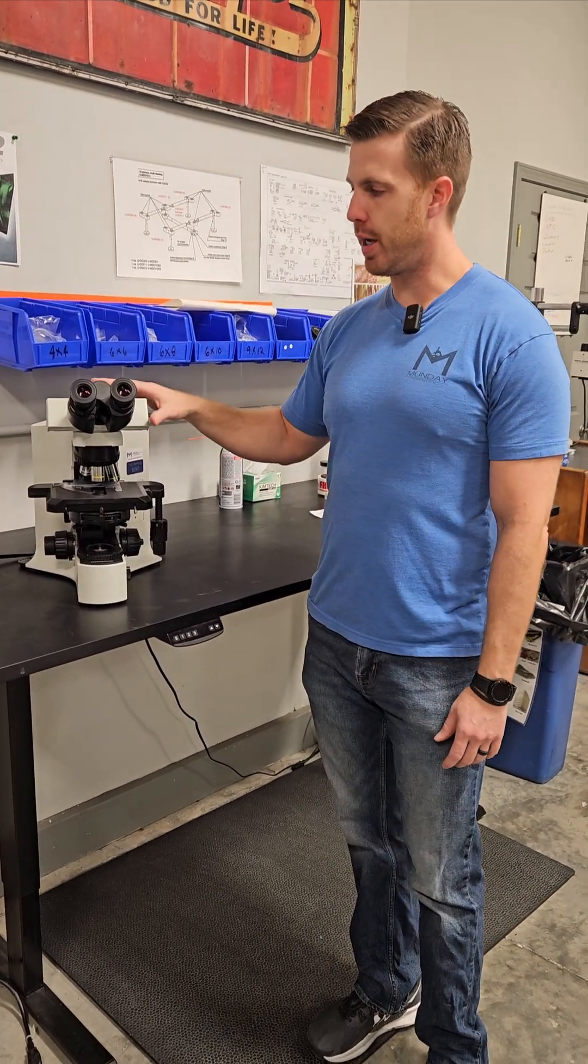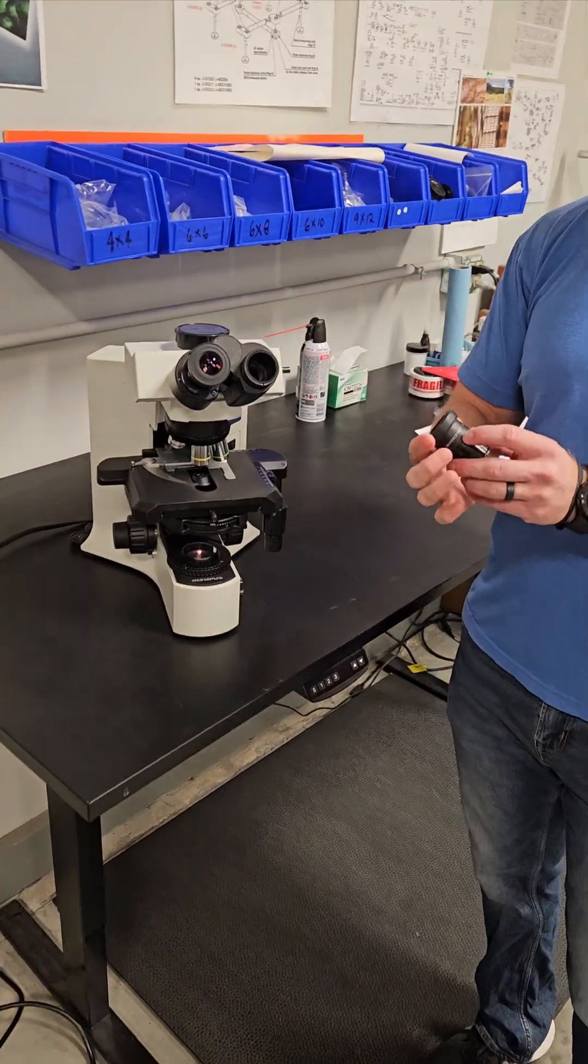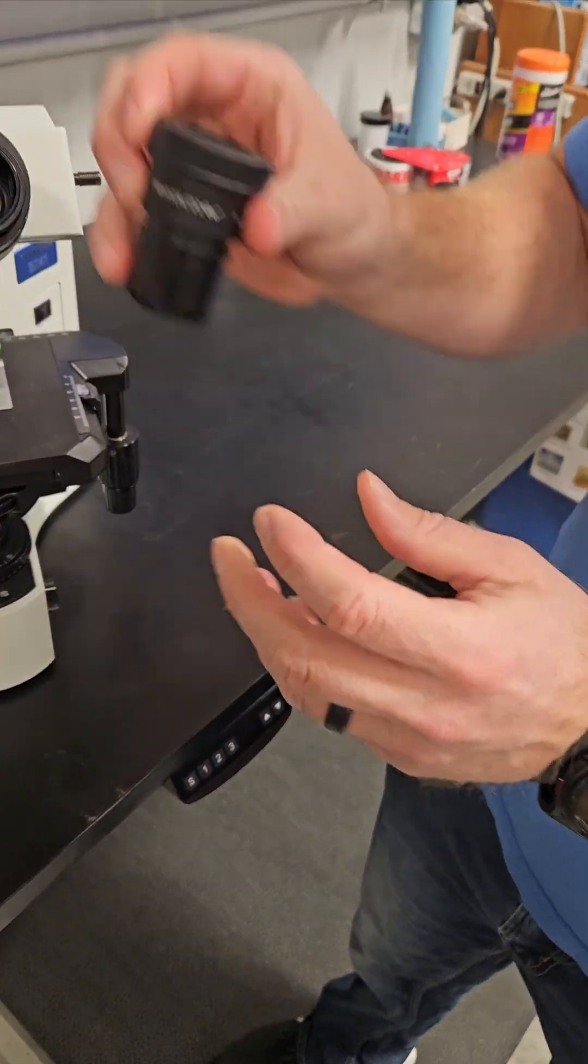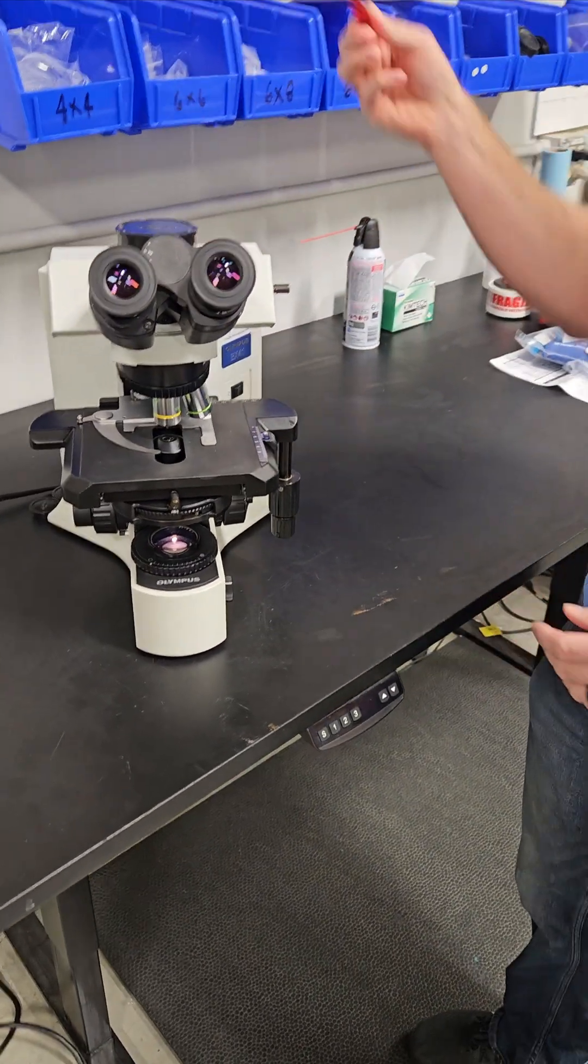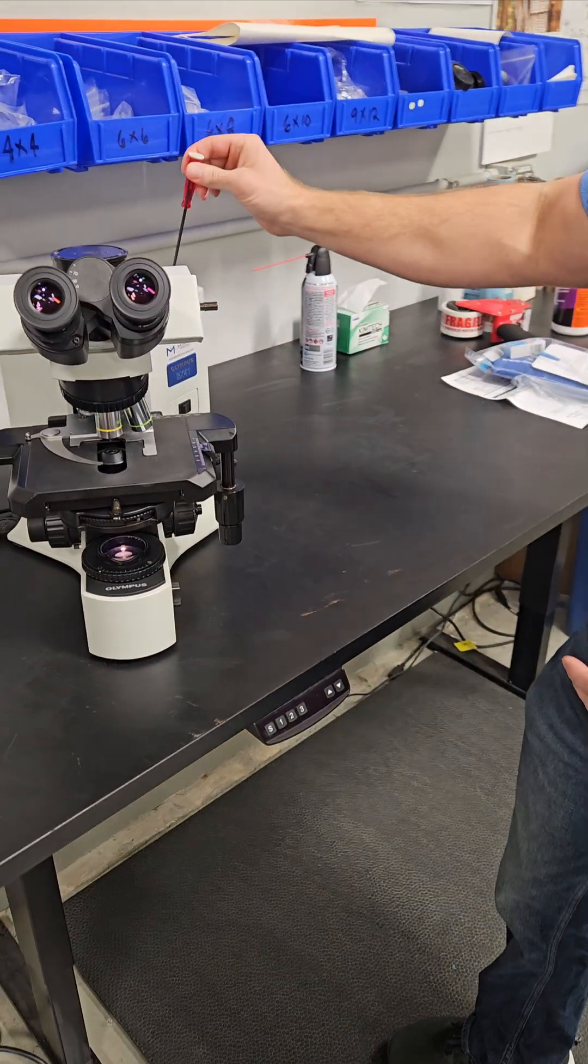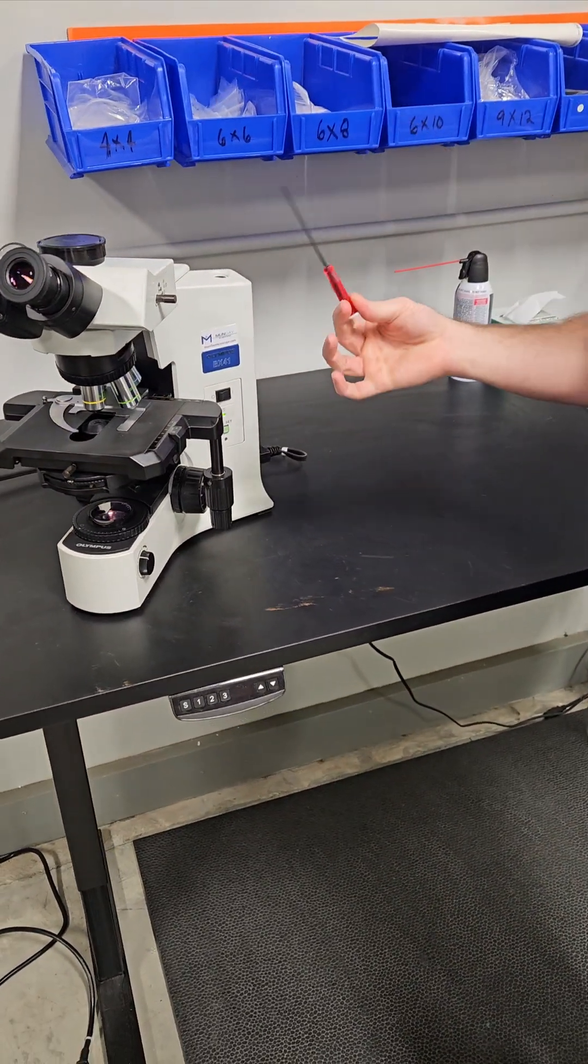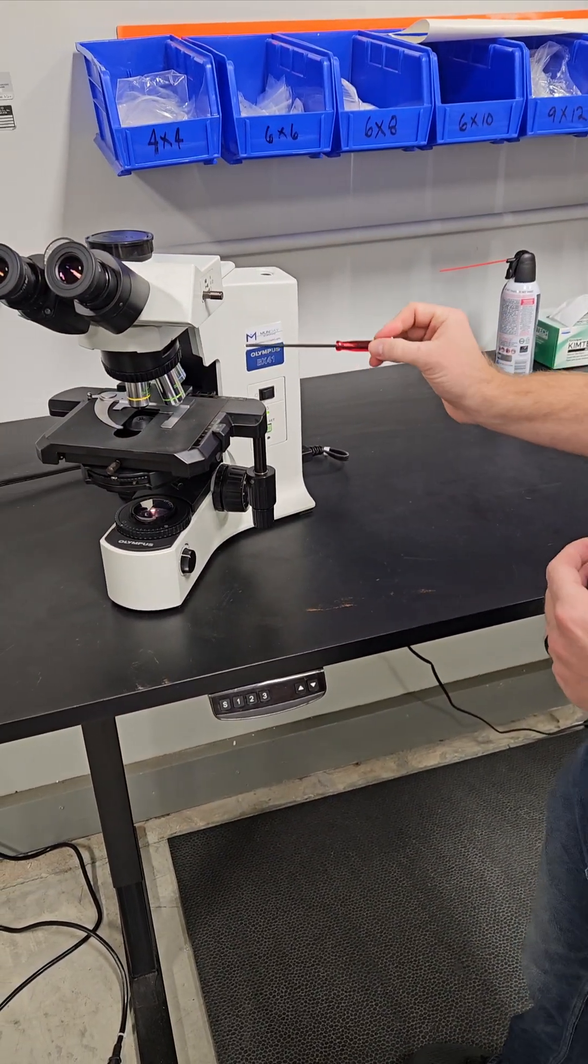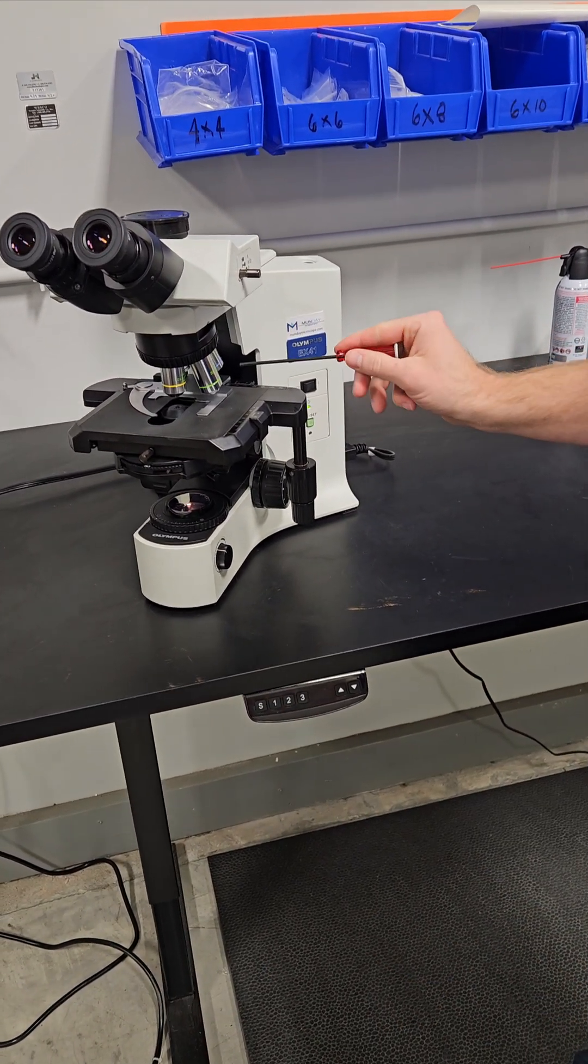It has a trinocular head. They're going to put a camera on the scope eventually, has 10X by 22 eyepieces. It has the tool that we love. So the tool comes out of the back right corner, the top of it. This tool can be used to basically disassemble or work on the microscope, move parts, things like that.